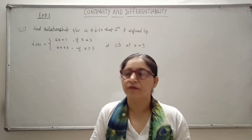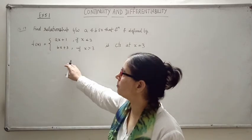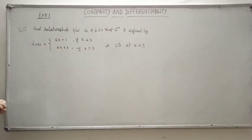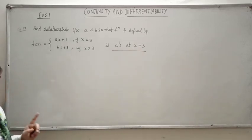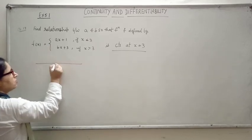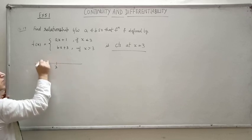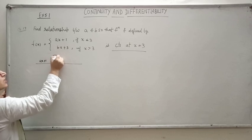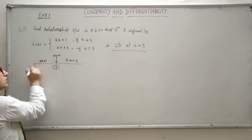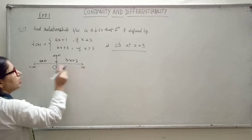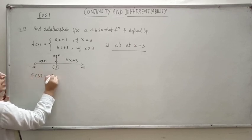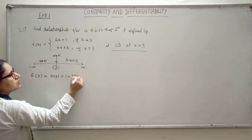This last question was an extra question not from the NCERT book. Now I have taken question number 17 from the NCERT book. In this question the function is already given to be continuous at x equals 3 and we are to find the relationship between A and B. On the left side of 3 the function is ax plus 1, at 3 it is also ax plus 1, and to the right of 3 it is bx plus 3. Since the function is continuous at x equals 3, left hand limit equals right hand limit equals f(3).